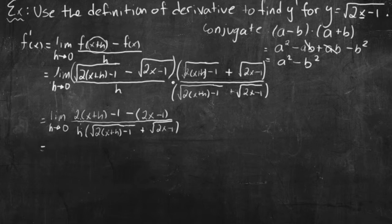Limit as h goes to 0. So I'm left with 2x plus 2h when I multiply through and distribute, and then the minus 1.